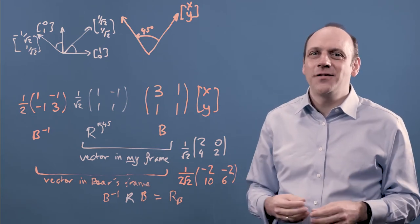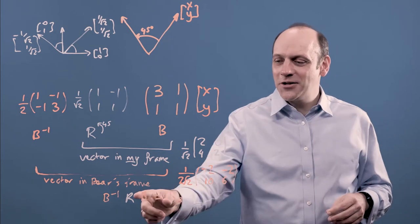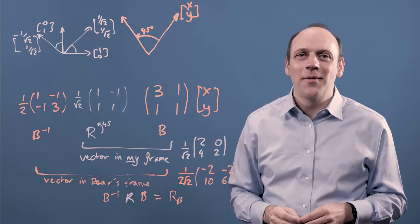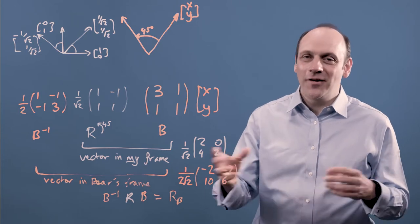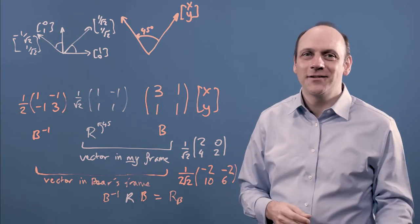And this is the sort of algebra you see all the time. We've got the transformation matrix R wrapped around by B, B to the minus 1, that does the translation from my world to the world of the new basis system.